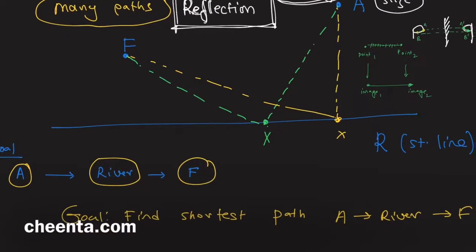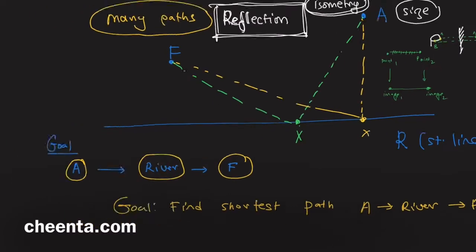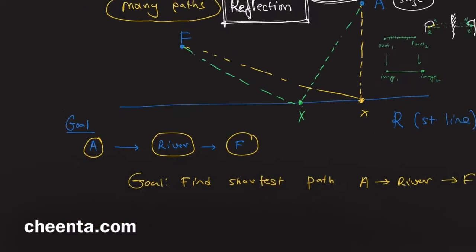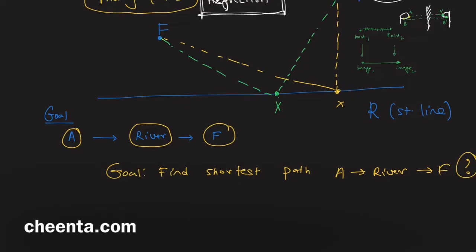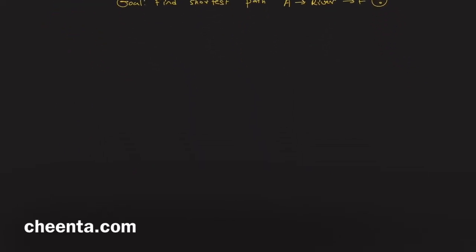Isometry preserves the distance between any pair of points. However, this reflection does not preserve orientation. How can you find the shortest path from A to the river to F? This is how you can think about it. This is also a problem of triangular inequality.